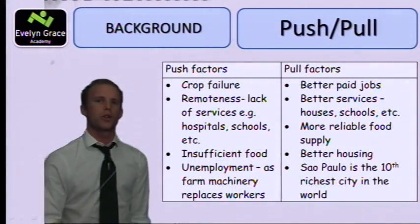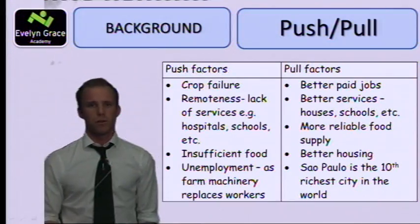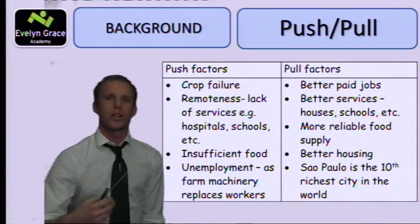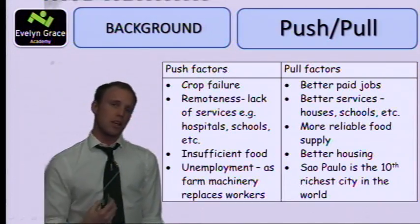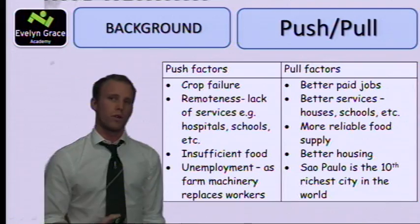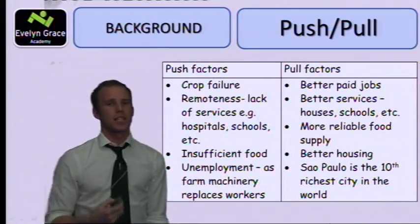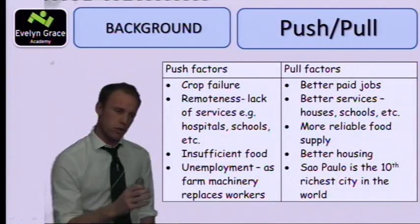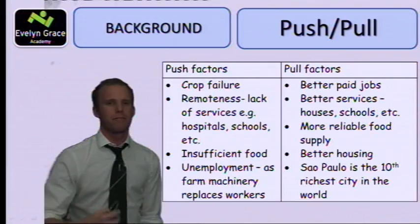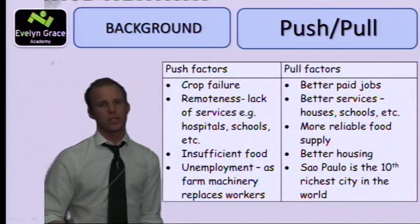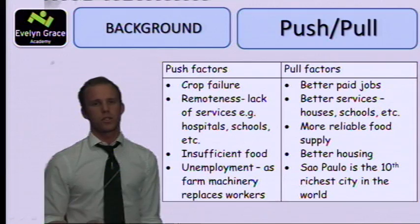Here are more push and pull factors — the reasons why people are wanting to move. They're pushed away from Caatinga by crop failure, its remoteness, and insufficient food. They're pulled towards Rio for its more reliable food supply, better housing, and better paid jobs. As you explain these push and pull factors, remember you also have to develop the impact these will have on people's lives.